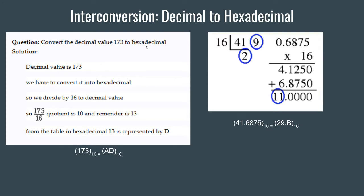Now let's get started. Suppose we have a decimal value 173 and we have to convert it into hexadecimal format. We simply need to divide it by 16 — in binary we divide by 2, in octal by 8, and in hexadecimal by 16. If we divide 173 by 16, the quotient is 10 and the remainder is 13.